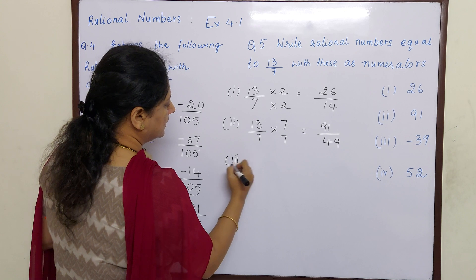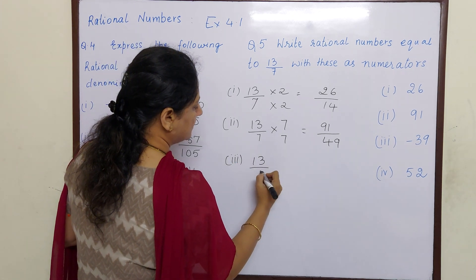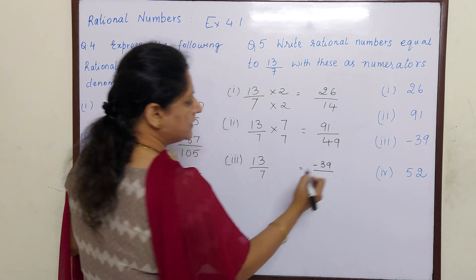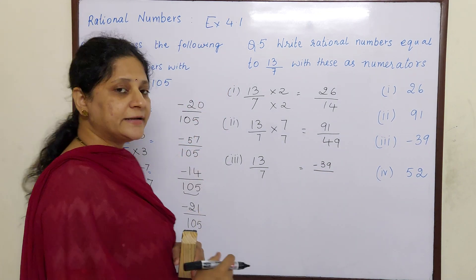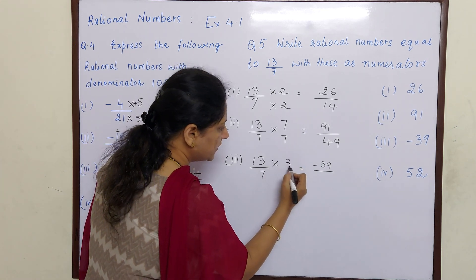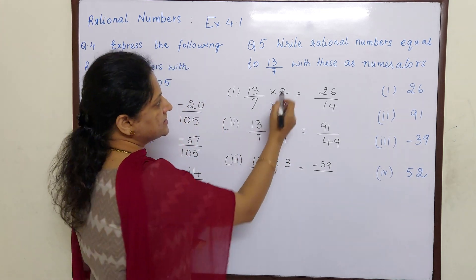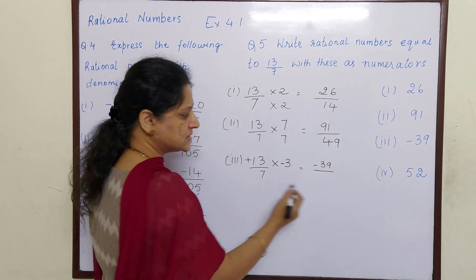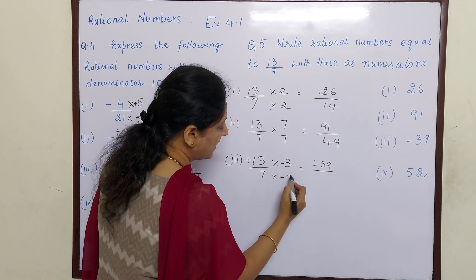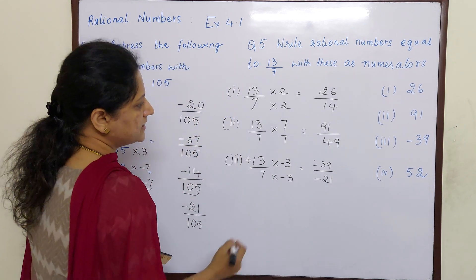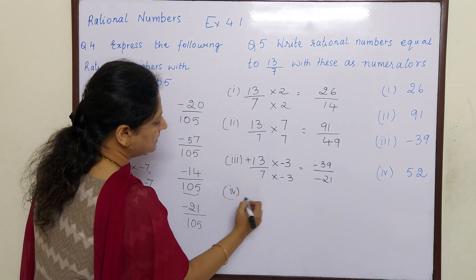So 13 by 7 is equal to dash. But numerator should be minus 39. Now 13 threes are 39. But here they have put here minus. And the question says only plus. So plus into minus is minus. So 7 into minus 3 minus 21.